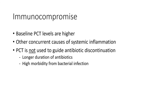In immunocompromised patients, baseline procalcitonin levels are usually higher due to concurrent causes of systemic inflammation, leading to chronically induced PCT levels and a higher baseline. It is not recommended to use procalcitonin as a guideline to discontinue antibiotics in these patients, since there is higher morbidity from bacterial infection requiring longer antibiotic duration. This brings us to the end. Thank you very much.